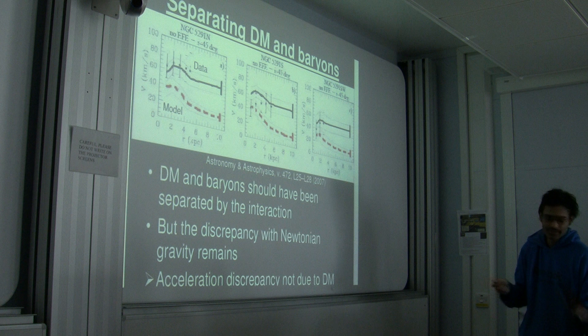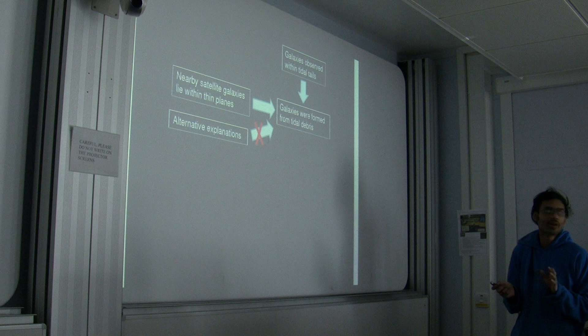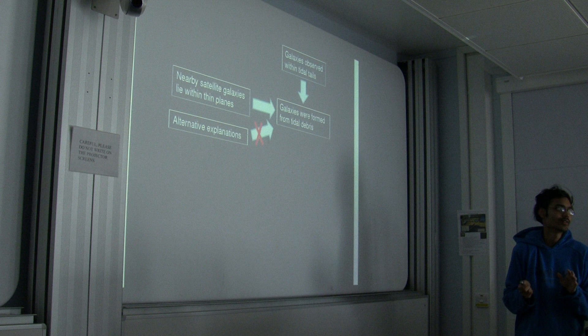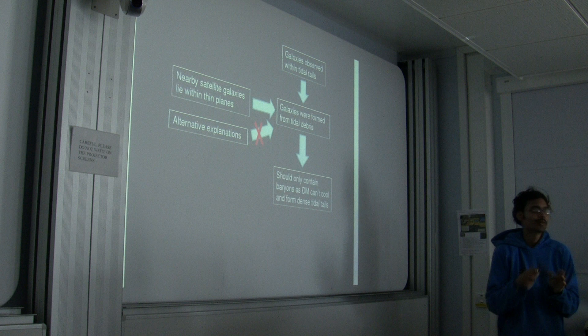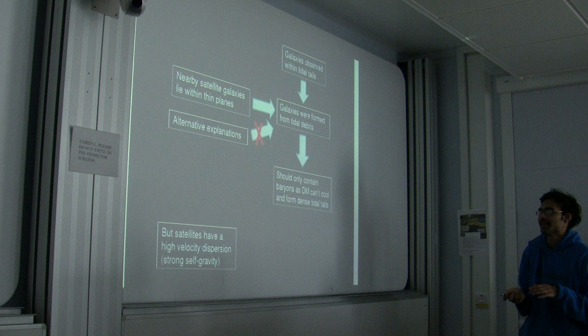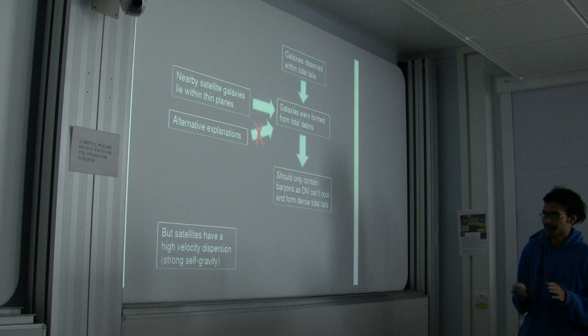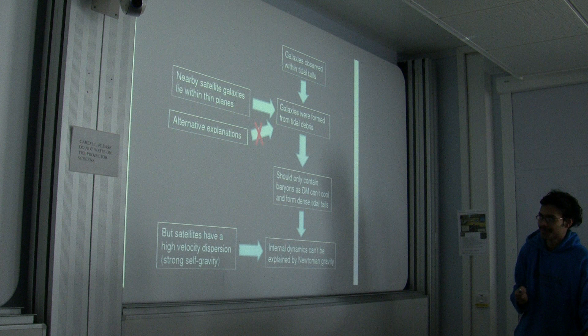Just to recap the logic: you observe galaxies within tidal tails, and nearby satellite galaxies lie within thin planes. Alternative explanations don't really work, so you conclude that the local group satellites were formed from tidal debris, which does work. Therefore they should only have baryons in the standard model, because dark matter can't cool and dissipate. But the satellites have a high velocity dispersion with strong self-gravity, not due to tides. The consequence is you can't explain internal dynamics using Newtonian gravity without dark matter. So you must have a modified gravity theory.